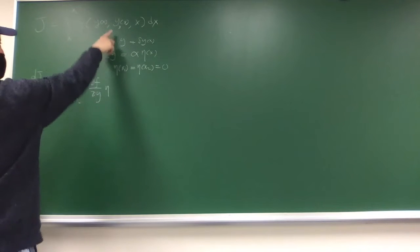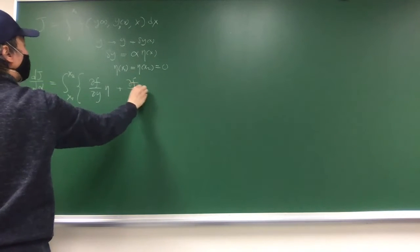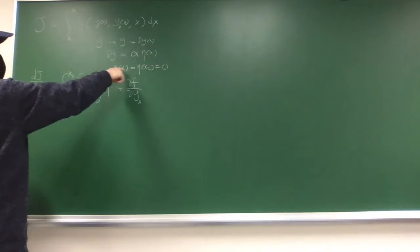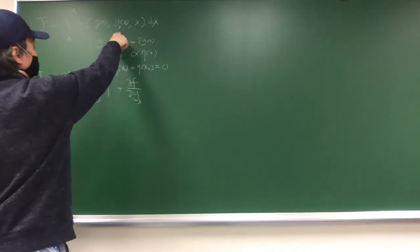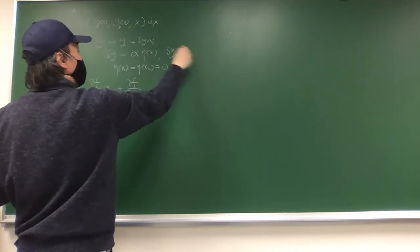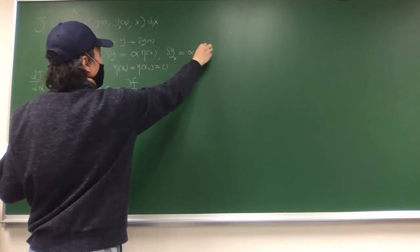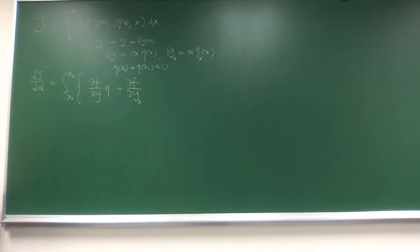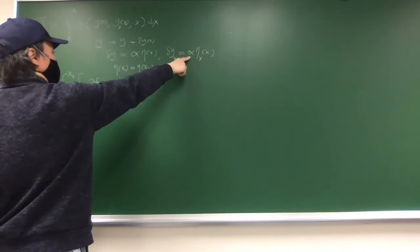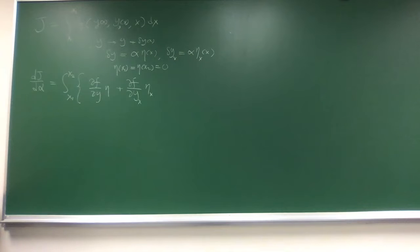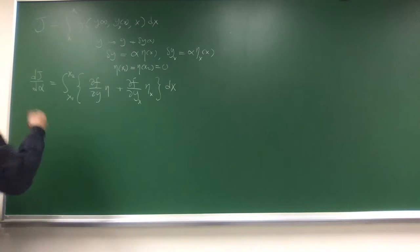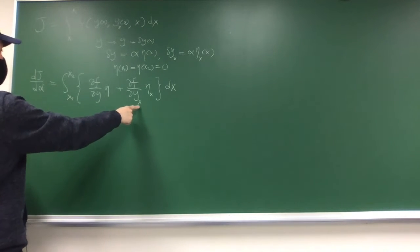So that handles the first term. Then there's a second term: partial f over partial y sub x, and we take the derivative with respect to y sub x. Since alpha is just a constant parameter, the derivative of y sub x with respect to alpha gives us d(eta)/dx - that is eta prime, or d eta over dx. So that's up to here, and then what we do with this second part is integration by parts.